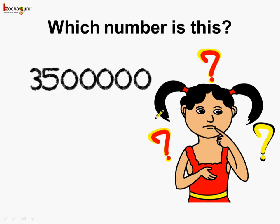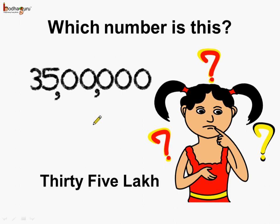Now there is a huge number. Can we read it? Let's do the same thing again — put the commas at their correct places. The units period has 3 digits, so a comma here. Then we have the thousands period — comma here. The next is the lakhs period, which consists of 2 digits. So this number is equal to 35 lakhs.